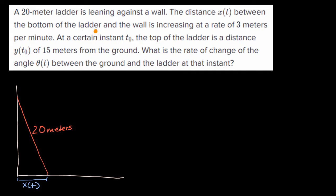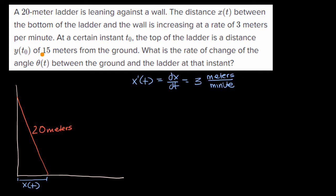They say x(t) is increasing at a rate of three meters per minute. So we know x'(t), which is the same thing as dx/dt, is equal to three meters per minute. That's the rate of change of x with respect to time. At a certain instant t sub zero, the top of the ladder is a distance of 15 meters from the ground — so this distance right over here is y(t), and y(t₀) is equal to 15 meters.